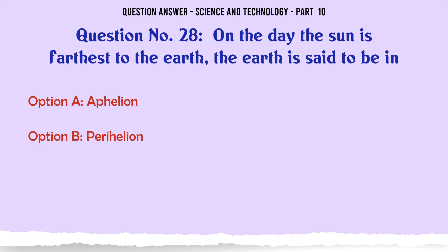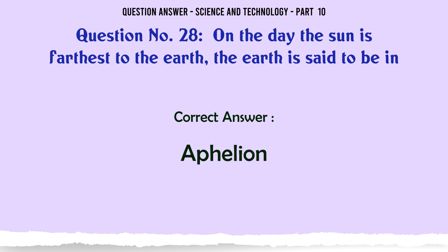On the day the sun is farthest to the earth, the earth is said to be in. A. Aphelion. B. Perihelion. C. Apogee. D. Perigee. The correct answer is Aphelion.